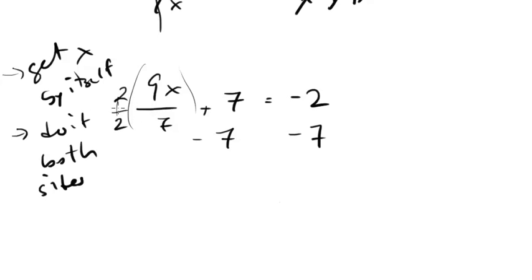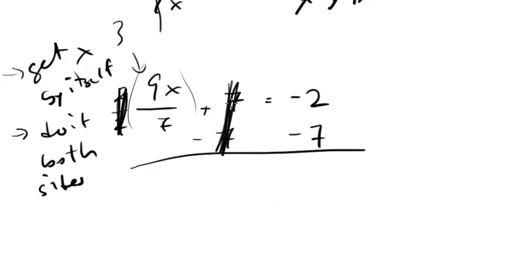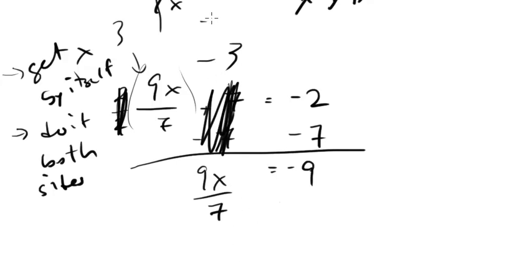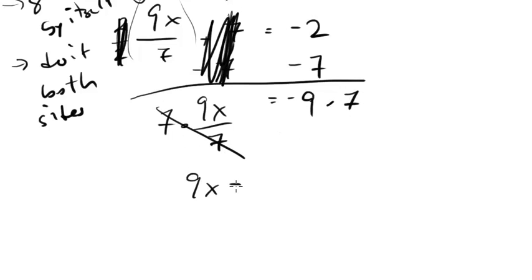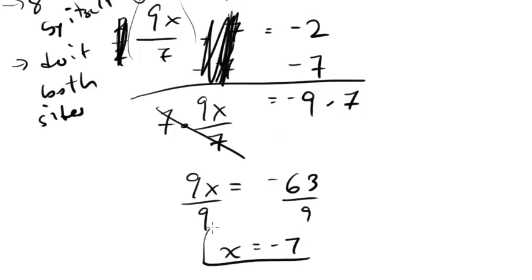We have a plus 7, so we subtract 7 from both sides — this cancels out, leaving negative 9. We have 9x over 7, so to get rid of the division by 7, we multiply both sides by 7. These cancel, giving 9x equals negative 63. Now we have 9 times x, so we divide both sides by 9 — the opposite operation — and we get x equals negative 7. That's your answer.